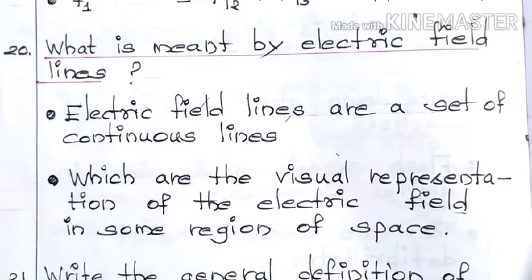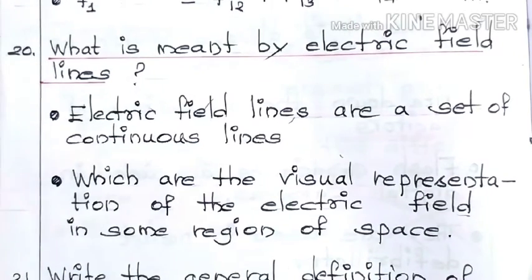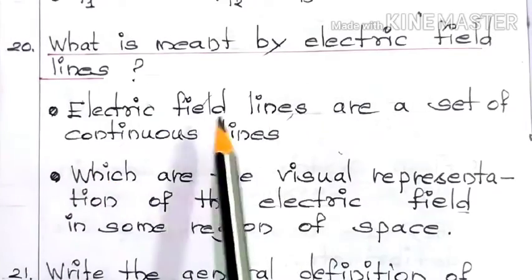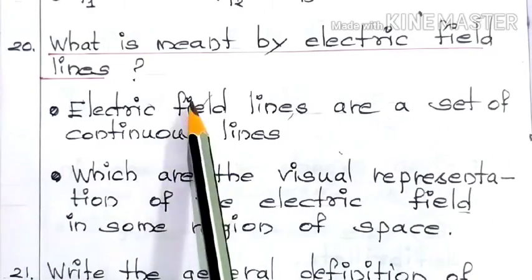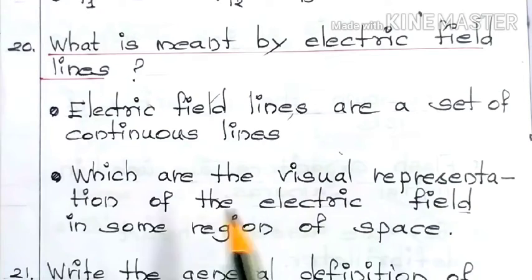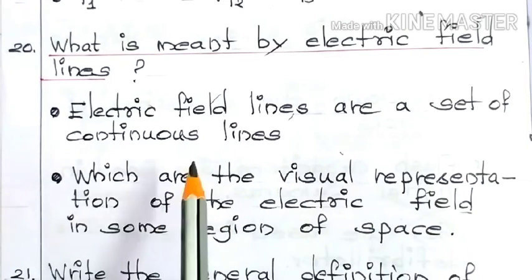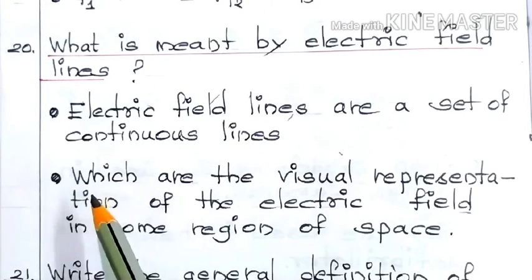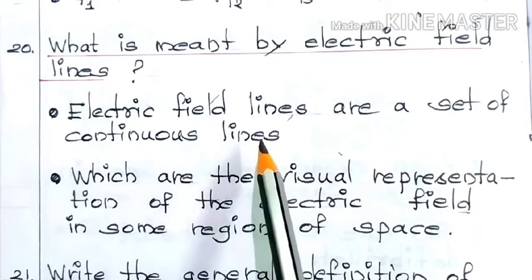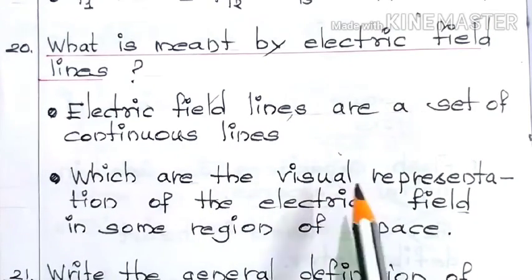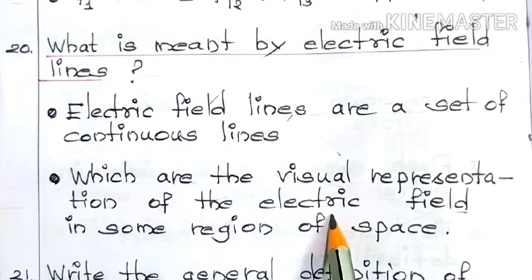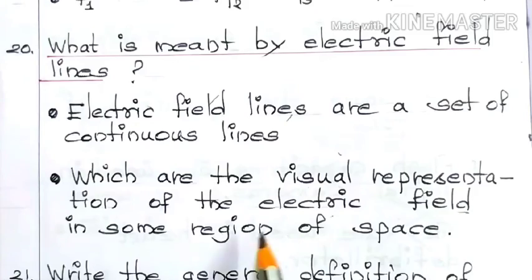Next question, question number 20: What is meant by electric field lines? Electric field lines are a set of continuous lines which are the visual representation of the electric field in some region of space. These electric field lines are nothing but a set of continuous lines drawn between a positive and a negative charge — the pictorial representation of the electric field in a region of space.